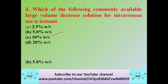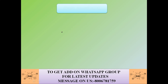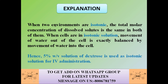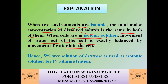The correct answer is 5% w/v dextrose solution, which is available as a large-volume dextrose solution for intravenous use. When two environments are isotonic, the total molar concentration of dissolved solute is the same in both. When cells are in an isotonic solution, movement of water out of the cell is exactly balanced by movement of water into the cell. Hence, 5% w/v dextrose is the isotonic solution for IV administration.